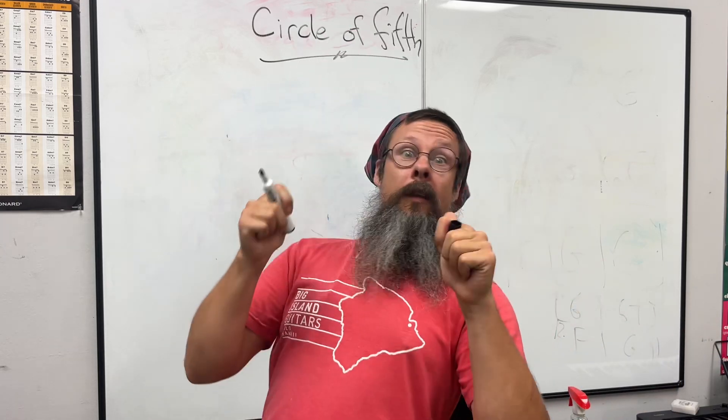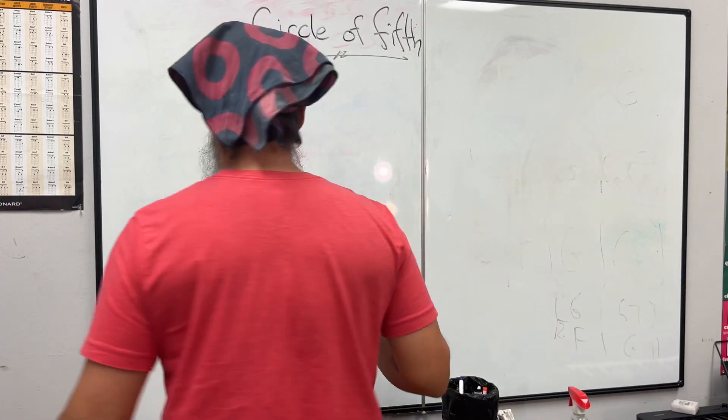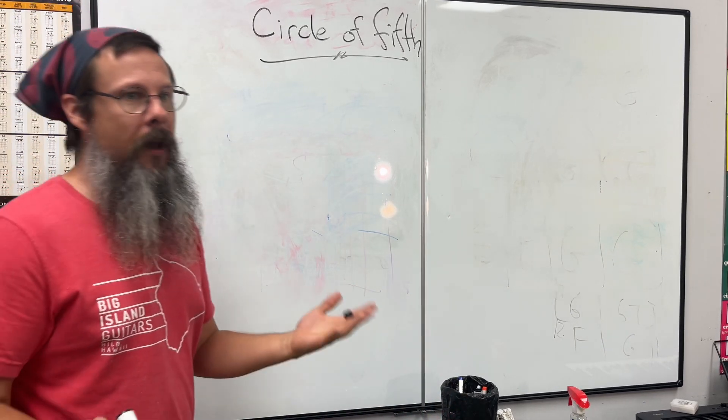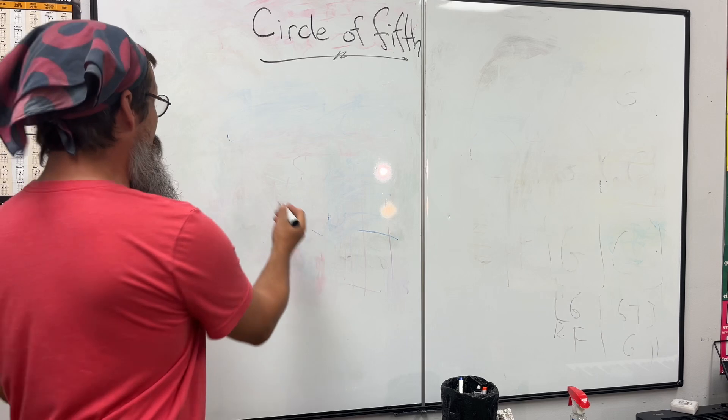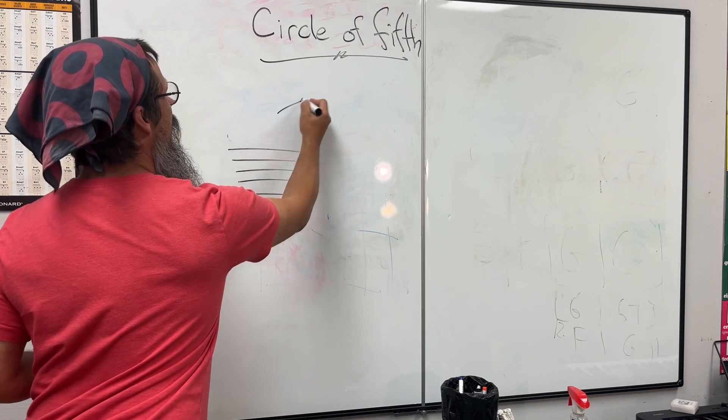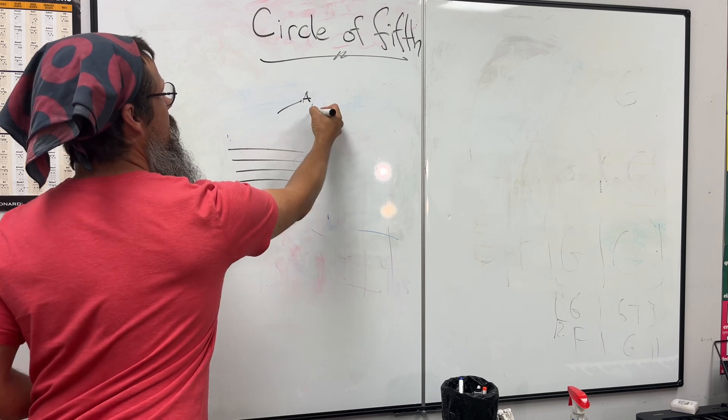We're looking at the comment section here. We're going to talk about family chords today. Last time we talked about how to use the Circle of Fifths to understand what sharps and flats are.